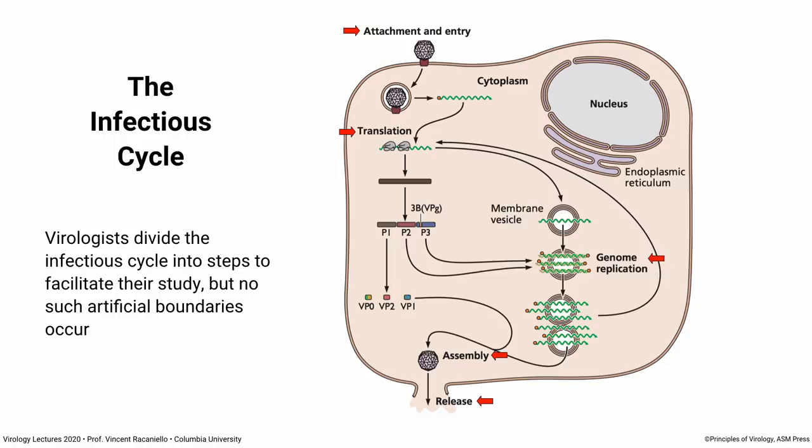Here is a diagram of a generic replication cycle, which shows that we divide it into steps so that we can study it. Many of us specialize in just one of the many steps of the cycle. But of course in a cell there are no steps — it all happens in a continuum. We just do that to make it easier conceptually. So here in this theoretical infectious cycle, we start with attachment and entry, and many of these steps we're going to have a separate lecture on.